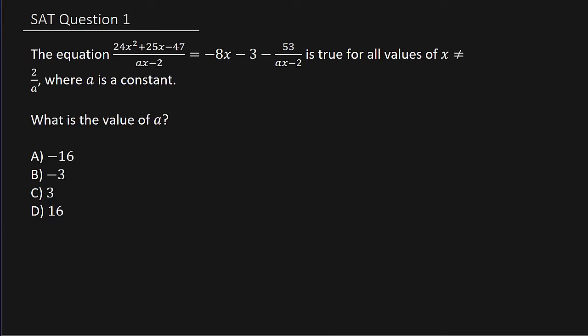So it says, the equation, this equation here, is true for all values of x not equal to 2 over a, where a is a constant. What is the value of a? So what does a need to be?